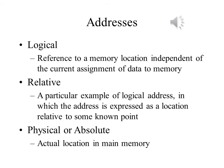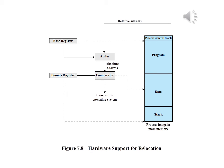A physical address, or absolute address, is an actual location in main memory. Programs that employ relative addresses in memory are loaded using dynamic runtime loading. Typically, all of the memory references in the loaded process are relative to the origin of the program. Thus, a hardware mechanism is needed for translating relative addresses to physical main memory addresses at the time of execution of the instruction that carries the reference.